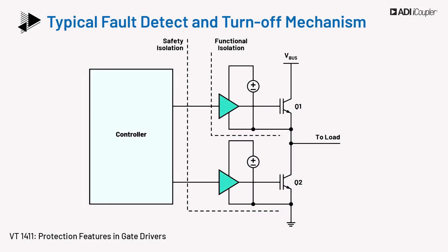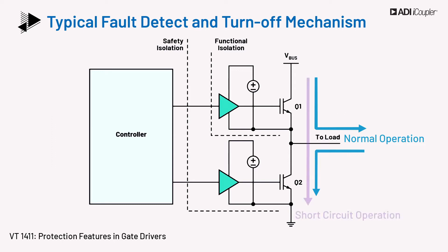In a half-bridge setup, both switches can never be on at the same time, or else there will be shoot-through. During normal operation, current will flow through either of the switches and through other components in the circuit for some duration, and through the other switch during the remaining duration of the switching cycle. Bad wiring or overload conditions, either between gate and device or on the power leg, may result in higher than normal current in the system. A short circuit occurs when a current higher than the rated value starts passing through the power switch.